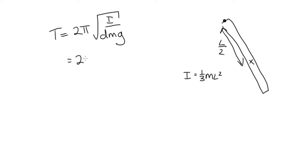So this is equal to 2π, square root of I is 1/3 ml squared. d, the distance of the center of mass from the pivot point, is given by l over 2. The mass of the rod was capital M, and g, little g, is little g.